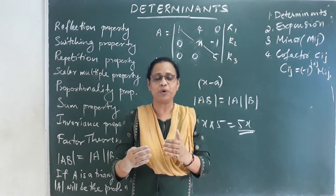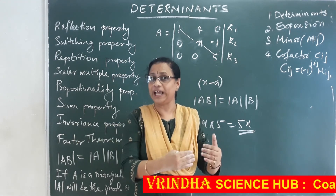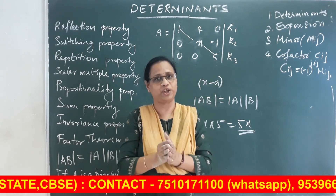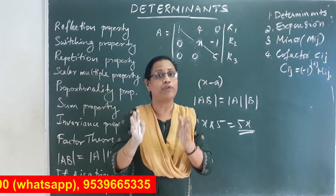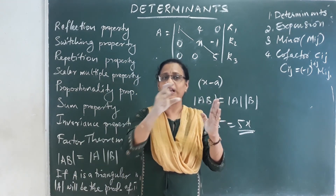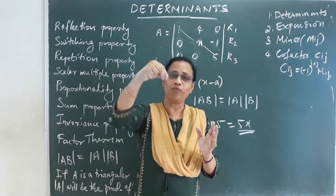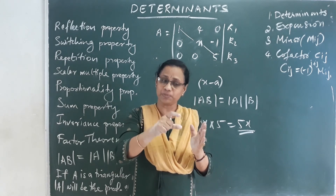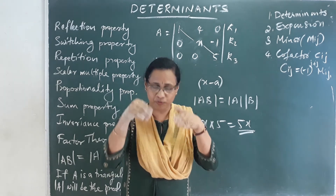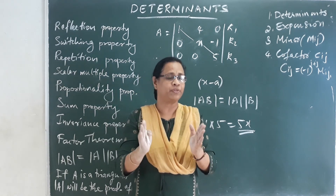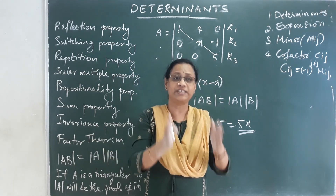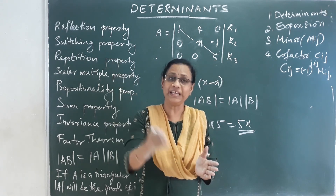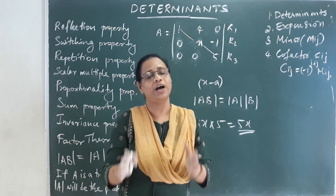Seventh is the invariance property: multiplying a row by a scalar and adding it to another row does not change the determinant value. Eighth is the factor theorem: if substituting x equals a makes the determinant zero, then x minus a is a factor. Ninth, the determinant of AB equals determinant A times determinant B. Tenth, for a triangular matrix, the determinant equals the product of the main diagonal elements.